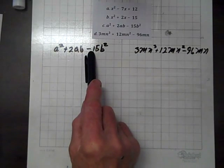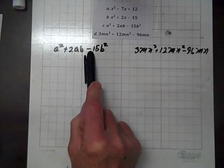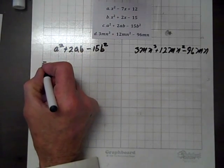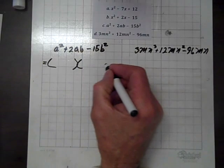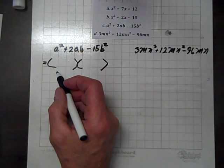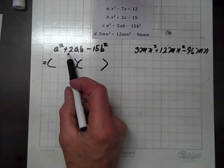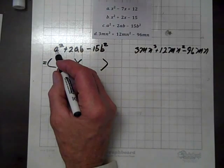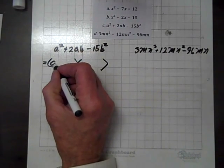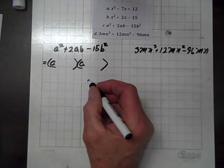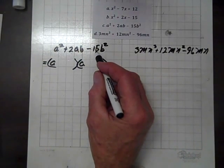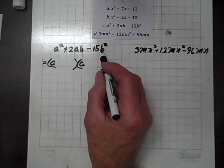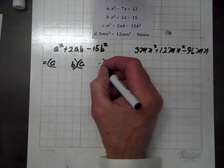Now the first term and the last term have different signs, so our middle term is a difference, and when we factor this, the expressions that will be multiplied together to form this trinomial will have different signs. So the factors of a² are a and a. And next, we have b² here. So ignoring the 15, the factors of b² are b and b.